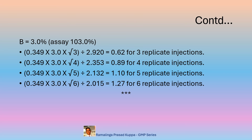Check all these numbers against the table given in USP Chapter 621. Compare the calculated values with the table provided in USP Chapter 621 — you will find that the numbers tally very closely. I hope that the RSD calculations are now clear for cases where specific RSD values are not specified for any API with a purity of 100%.